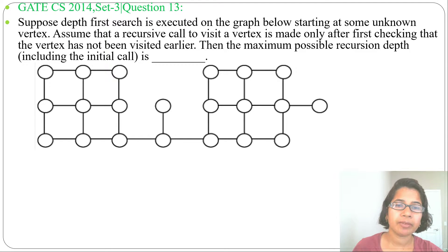Suppose depth first search is executed on the graph below starting at some unknown vertex. This is the graph. Assume that a recursive call to visit a vertex is made only after first checking that the vertex has not been visited earlier. Then the maximum possible recursion depth including the initial call is? Let me start from this vertex 1.